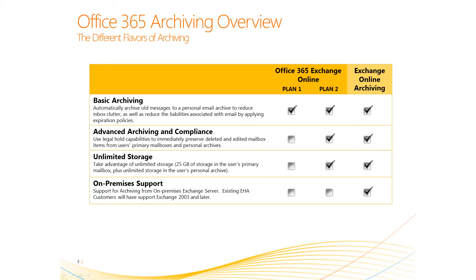There are three different flavors of archiving with Office 365. The first is Exchange Online Plan 1, which includes basic archiving for customers that want to store old messages to a personal email archive to reduce email clutter. Exchange Online Plan 2 as well as Exchange Online Archiving have richer functionality around advanced archiving and compliance, as well as unlimited storage to provide more than 25 gigs of storage for end users. Exchange Online Archiving additionally has on-premises support for organizations that want a on-premises primary mailbox with a cloud-based email archive.